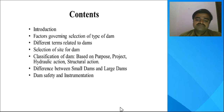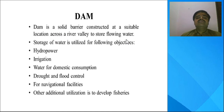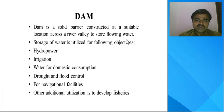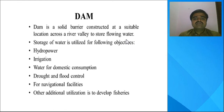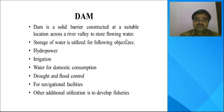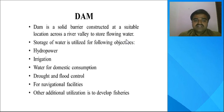Let us start with the definition of the dam. In simple terms, a dam is a solid barrier constructed at a suitable location across a river valley to store flowing water. The different objectives of a dam are to store water for irrigation, domestic consumption, generation of electricity, navigational facilities, and other uses such as fisheries.